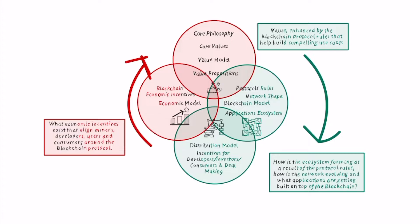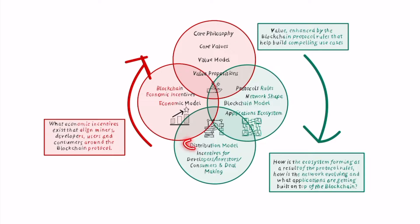In the research at 4week MBA we looked at four key elements: one is the value model, the second is the blockchain model, the third is the distribution model, and the fourth is the economic model.